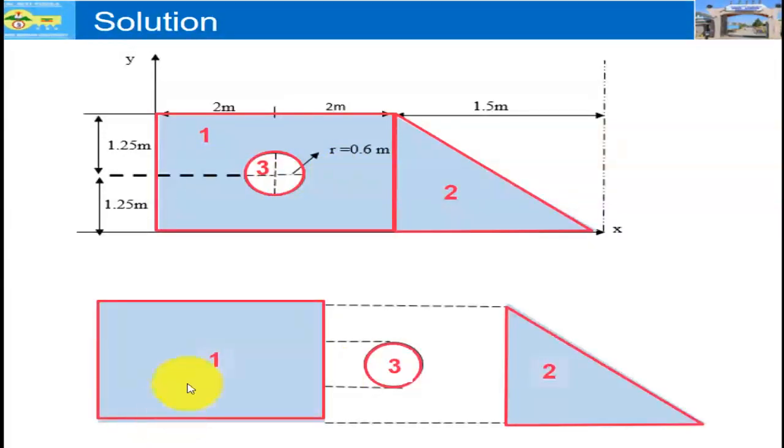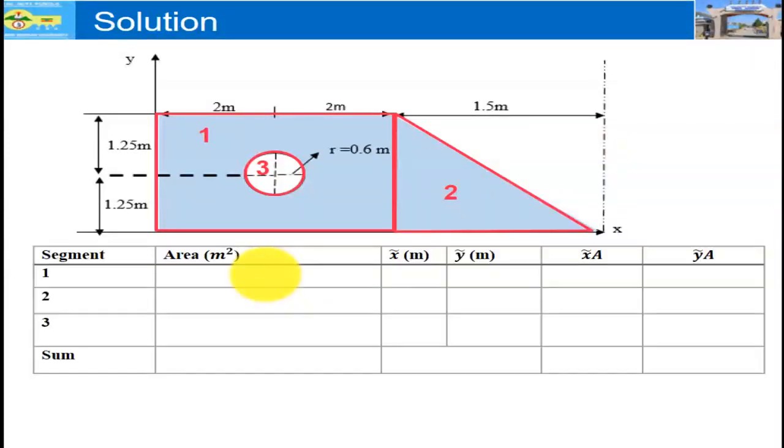Remember that the rectangle is full shaded and solid, the circular shape is hollow, and the triangle is shaded. The second step is to prepare a table. This is an effective way. I recommend for everyone to use this strategy, the tabular method.